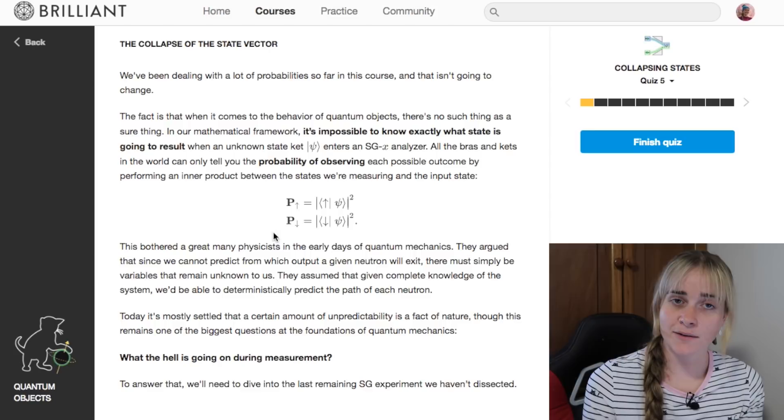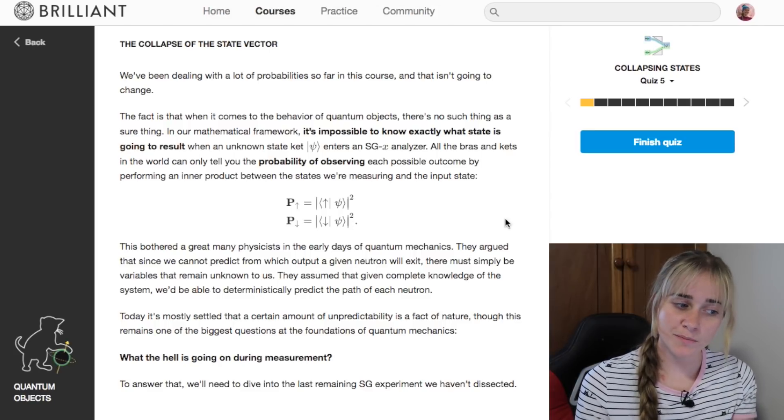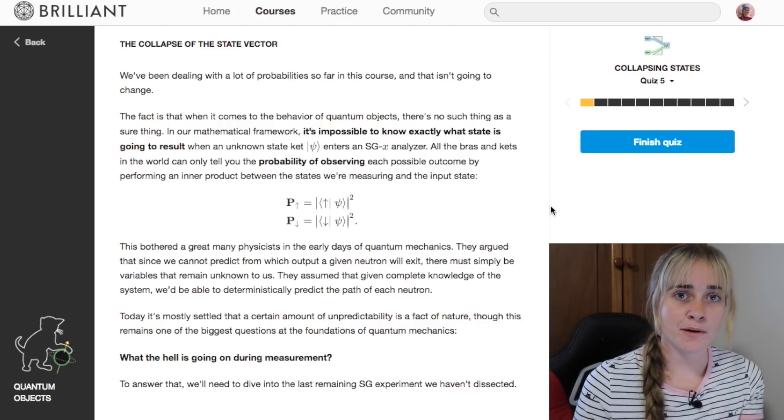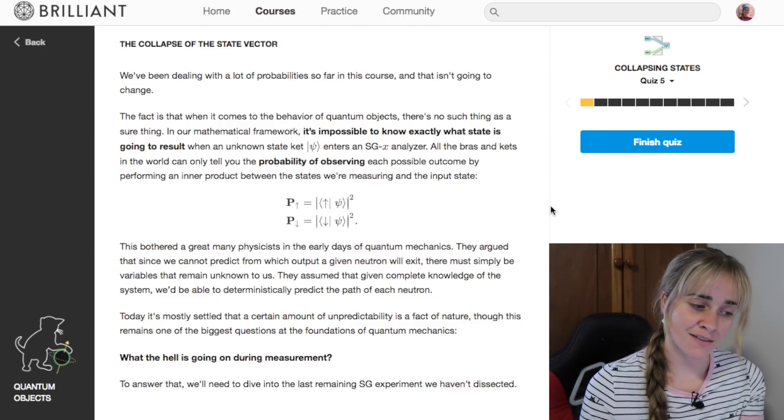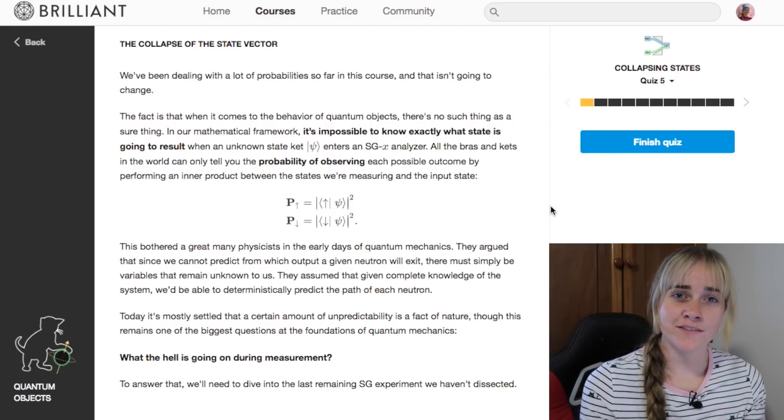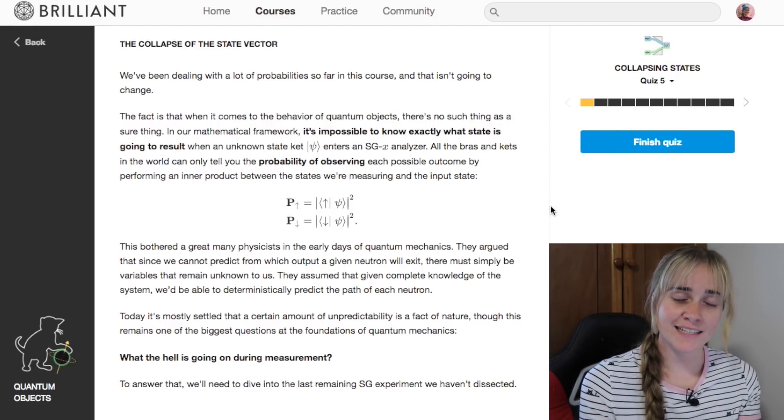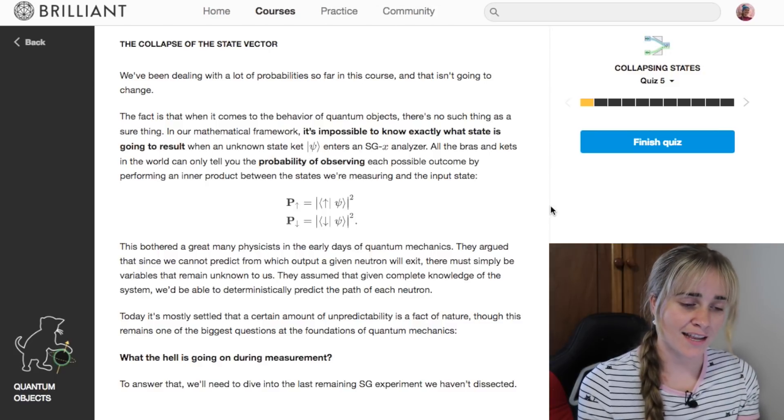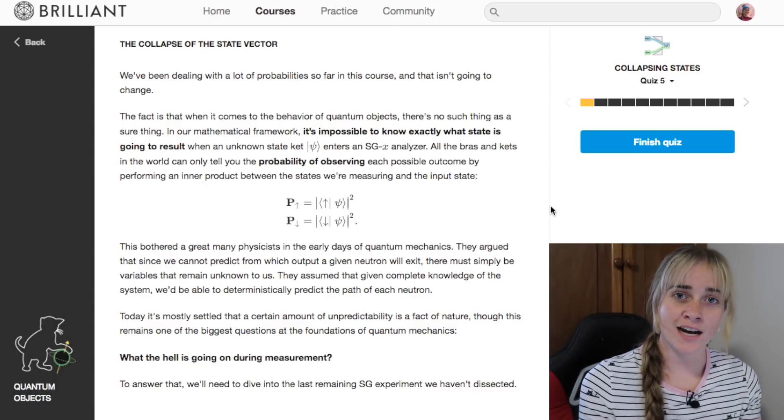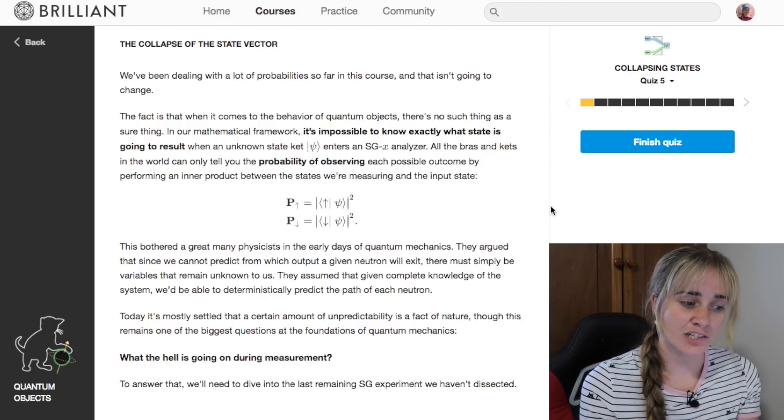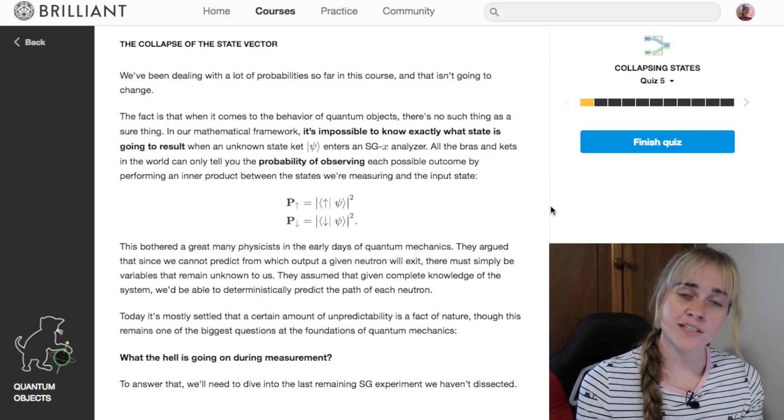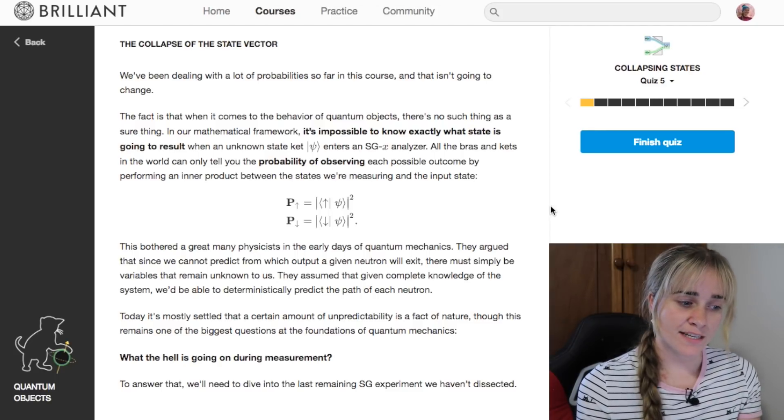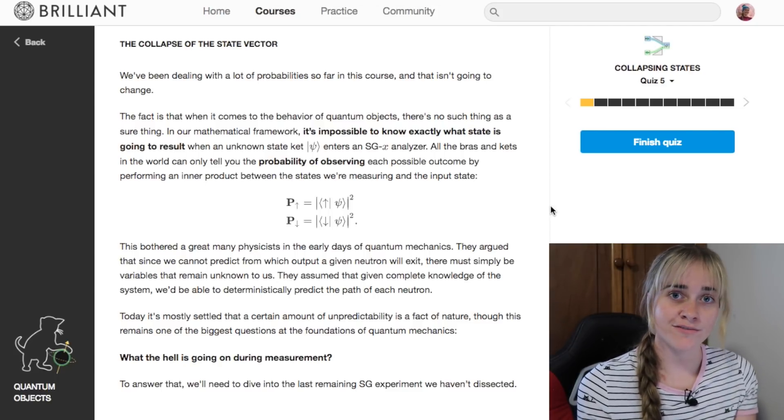These probabilities here that we can write are just the probability of observing each outcome, but we never know exactly what is going to happen. This was a bit of a disturbing part of quantum mechanics, especially in the early days. Even Einstein had a quote saying God does not play dice with the universe when he initially rejected this idea that quantum mechanics comes down to probabilities and that there is an inherent randomness to reality.